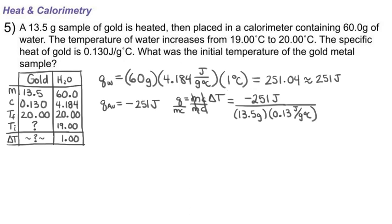Notice we are going to get a negative temperature change here, and that makes sense because the temperature of the gold should decrease when it is placed into the water. So when I divide all this out, negative 251 divided by 13.5 divided by 0.13, I got a value of negative 143.04.